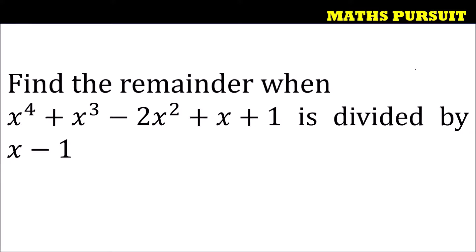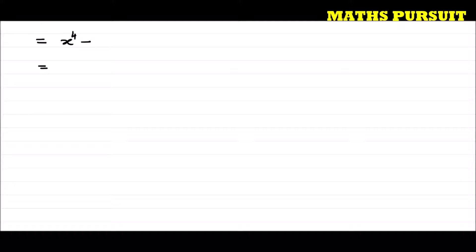Let us look into this question. The question has given us two polynomials. One is x to the power 4 plus x to the power 3 minus 2x to the power 2 plus x plus 1, and the other polynomial is x minus 1.